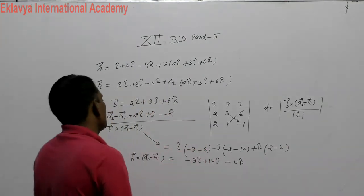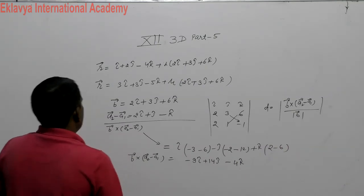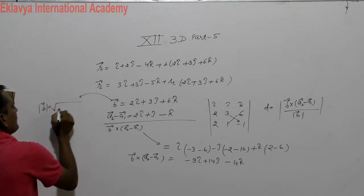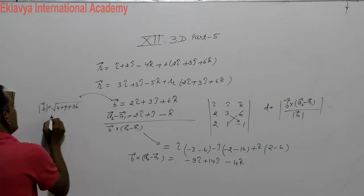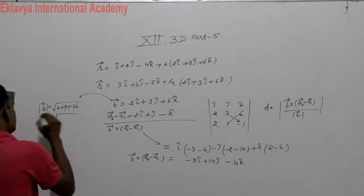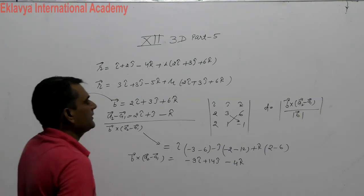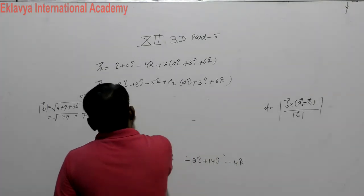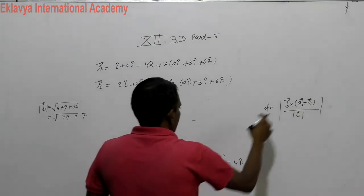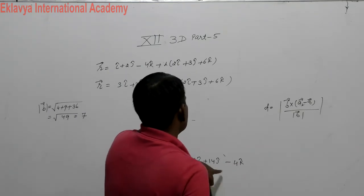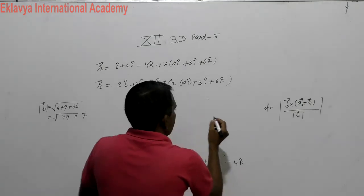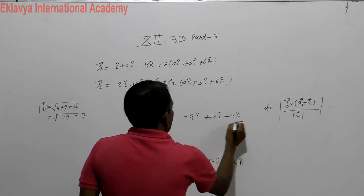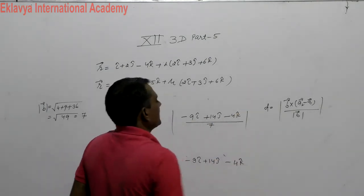Now the magnitude of B vector: root of (2 squared plus 3 squared plus 6 squared) equals root of (4 plus 9 plus 36) equals root of 49 equals 7. We calculate the distance as the magnitude of (minus 9i plus 14j minus 4k) over 7. So it is 1 over 7 times root of (81 plus 196 plus 16).